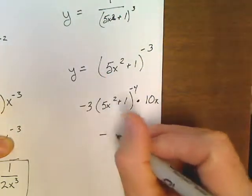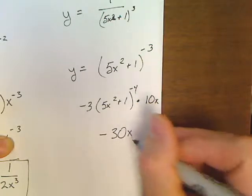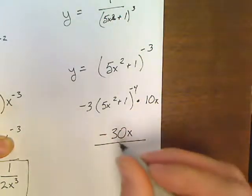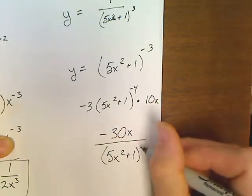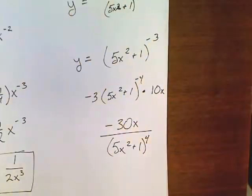And you end up with negative 30x over (5x squared plus 1) to the fourth.